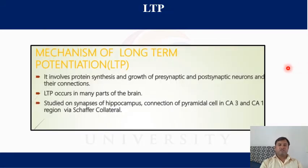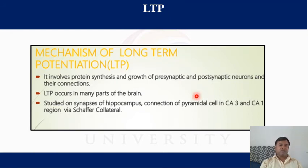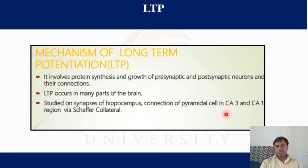The main function of the hippocampus is long-term potentiation, which involves protein synthesis and growth of presynaptic and postsynaptic neurons and their connections. Long-term potentiation occurs in many parts of the brain, with studies focusing on the synapses of hippocampal pyramidal cells in the CA3–CA1 region via Schaffer collateral fibers.